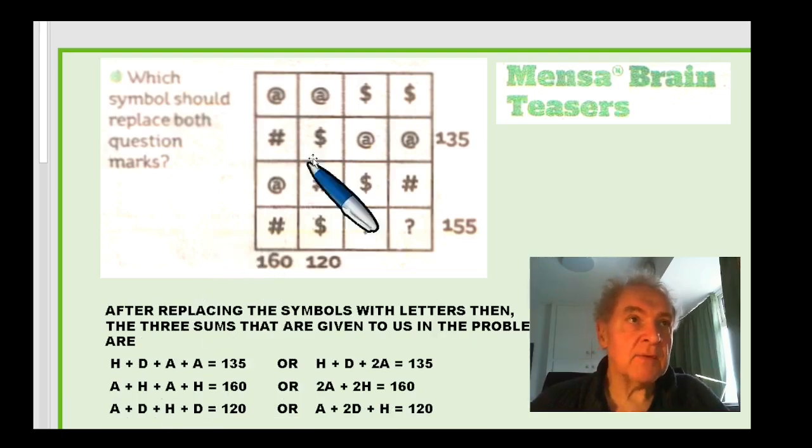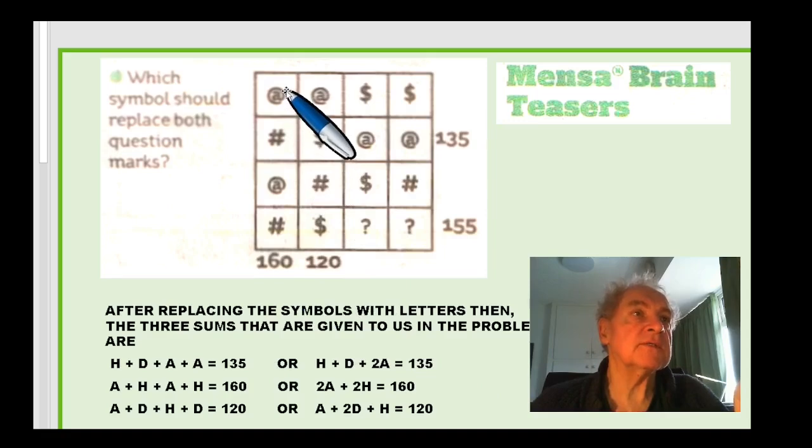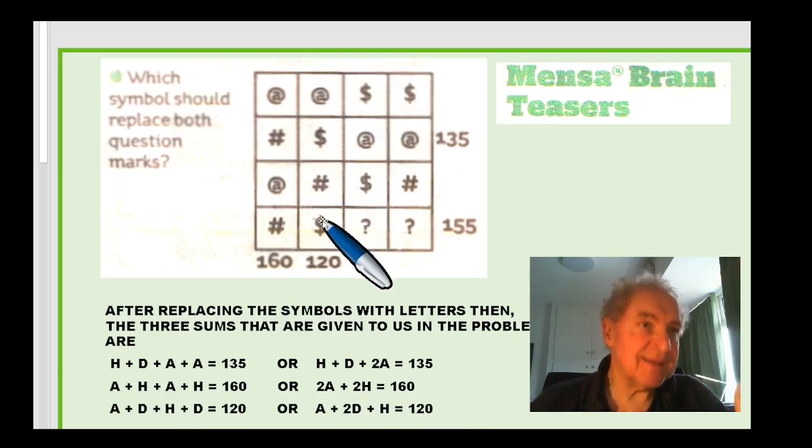After writing these down, we can see that this row is h plus d plus a plus a. So a shorthand notation for that is h plus d plus 2a equals 135. I'm doing the same for these two columns. You've got 2a plus 2h equals 160. An a plus d plus an h plus a d equals 120, or a plus 2d plus an h equals 120.